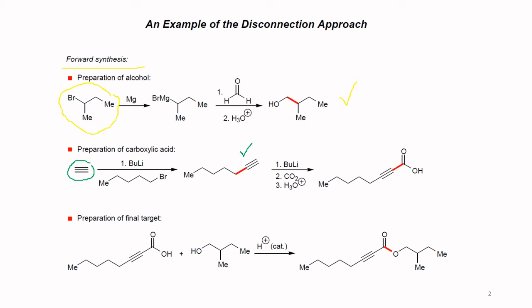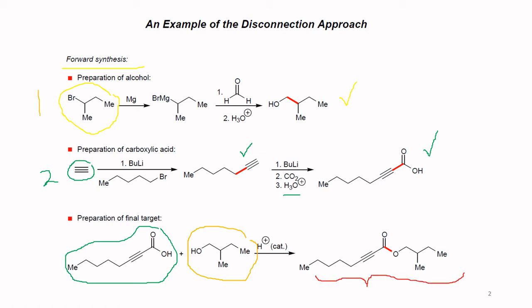We then react the organolithium compound with carbon dioxide in the presence of acid to get the carboxylic acid. The last step to produce the target molecule is by reacting this carboxylic acid with the alcohol obtained earlier, giving a final product which is the ester.